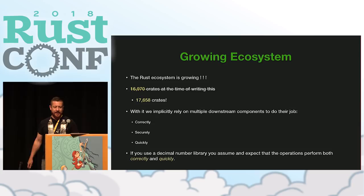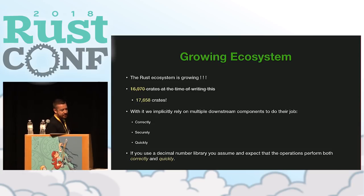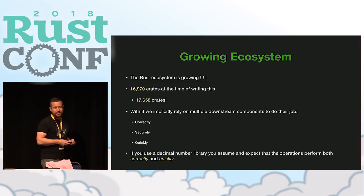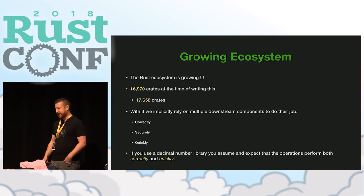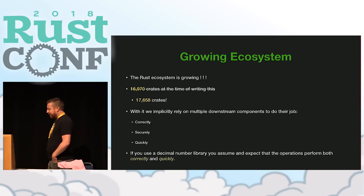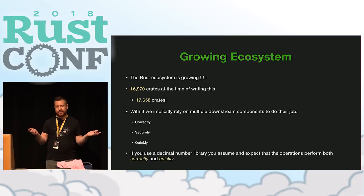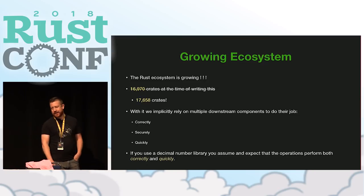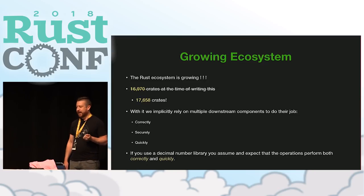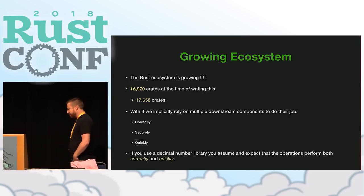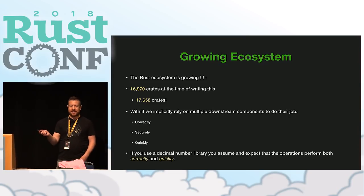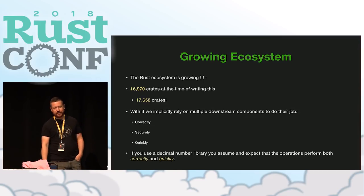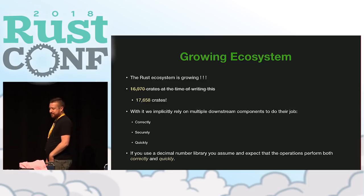The Rust ecosystem is growing. When I first put together these slides it was just under 17,000 crates; this morning it was around 17,700, and very soon it's going to be 18,000 crates. With all those crates, we're starting to use them in our projects and implicitly relying on them and their downstream dependencies to do their job correctly, securely, as well as quickly. If you're using a decimal number library, you don't want that to be the performance bottleneck of your system, and you also don't want it to be the source of bugs.